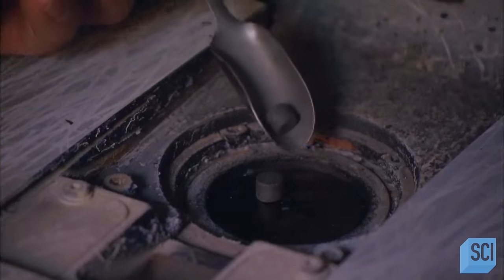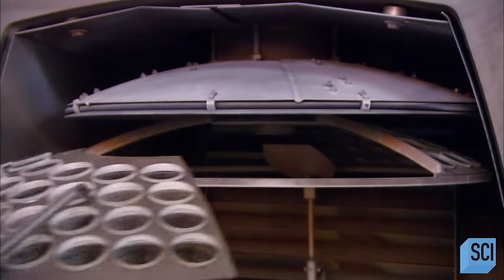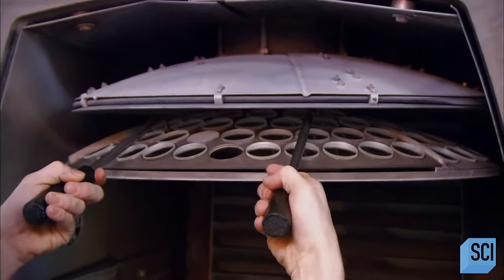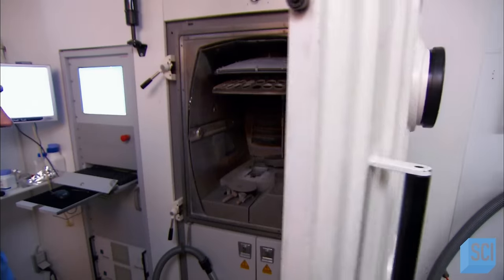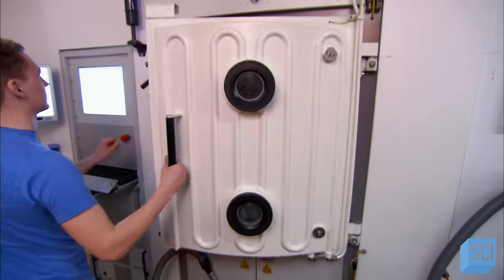Next, a technician loads mineral pellets into a vacuum chamber. Their exact formulation is a company secret. The pellets produce an anti-reflection lens coating that lets more light come through the lenses.